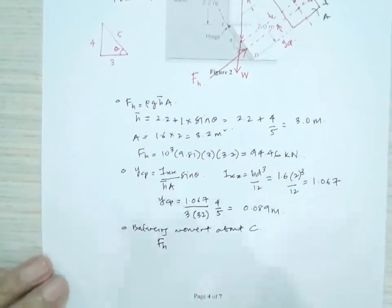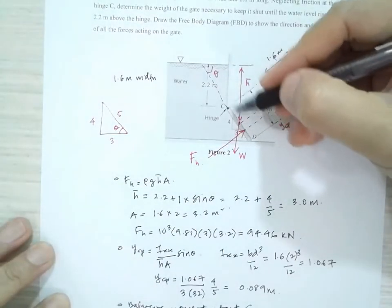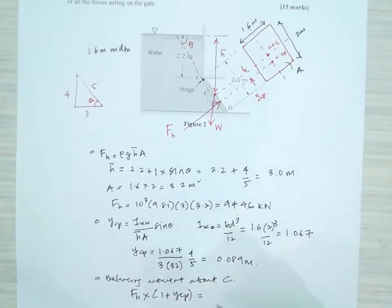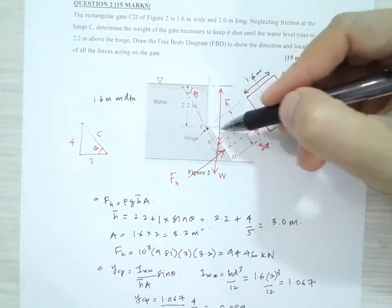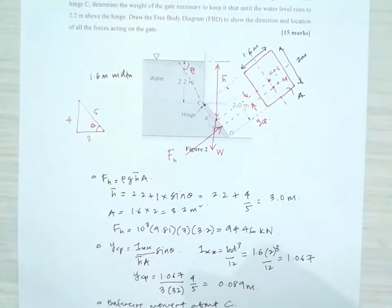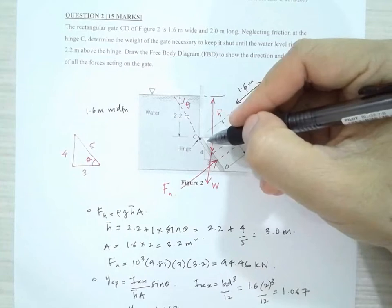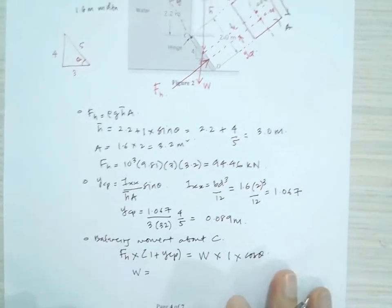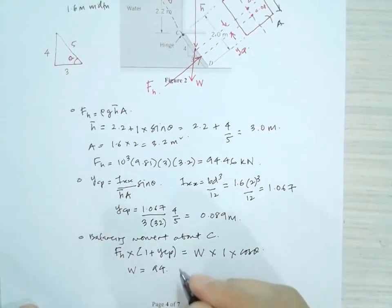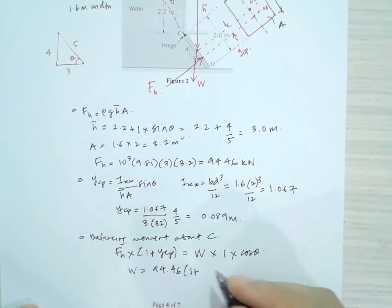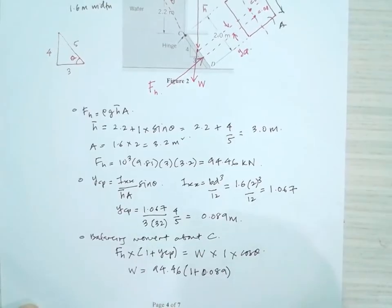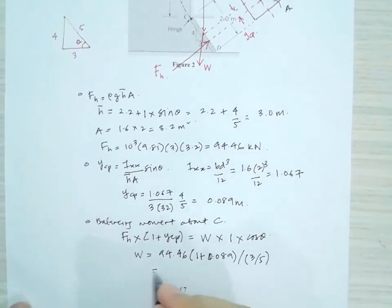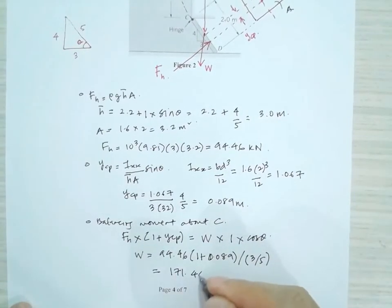Moment due to the hydrostatic force equals F_H multiplied by the arm, which is 1 + Y_CP. This must be balanced by the moment created by the weight, which is W multiplied by 1 × cos θ. We can rearrange to get W = F_H × (1 + Y_CP) / cos θ = 94.46 × (1 + 0.089) / (3/5) = 171.44 kilonewton.